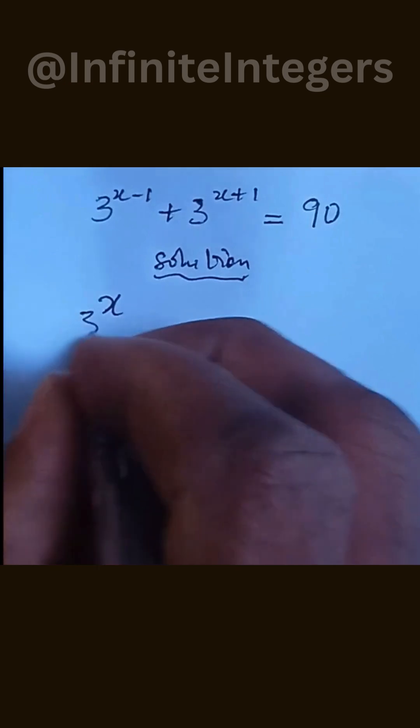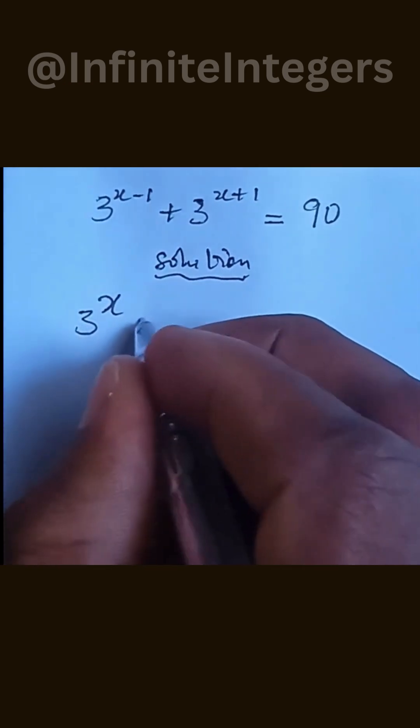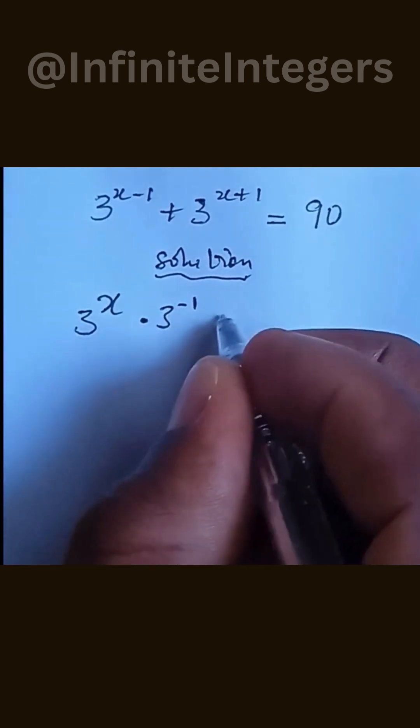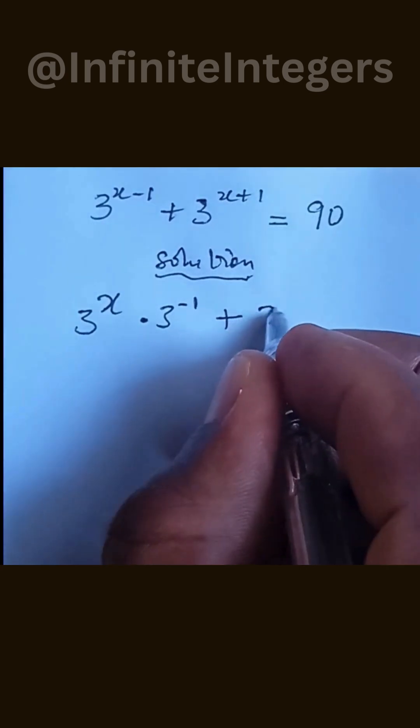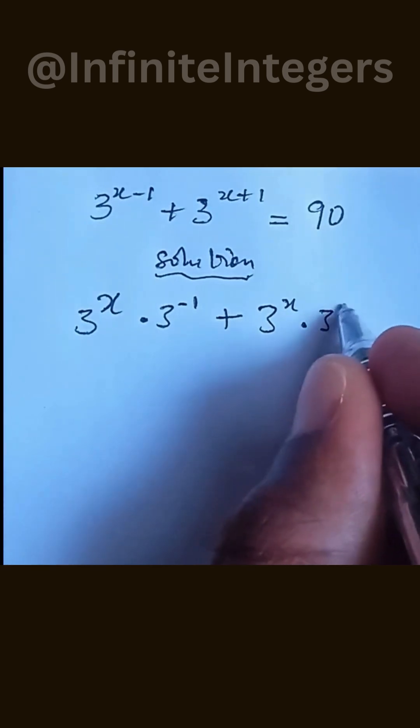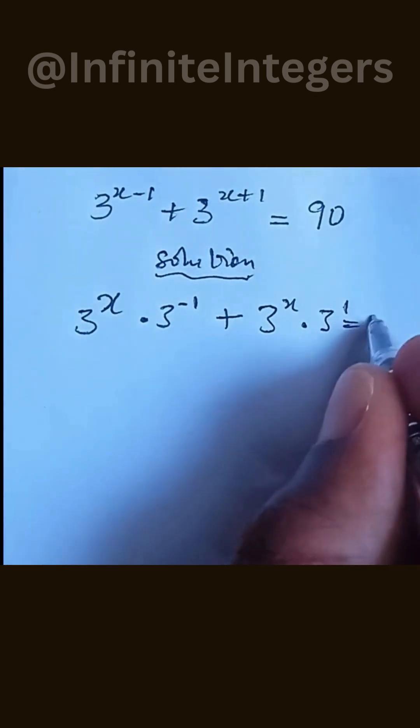Here we can rewrite this as 3 to the power of x multiplied by 3 to the power of minus 1, then plus 3 to the power of x multiplied by 3 to the power of 1, everything equal to 90.